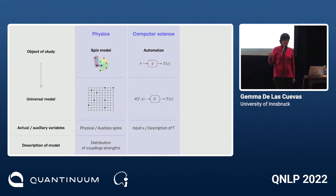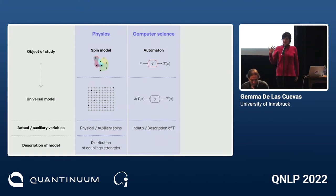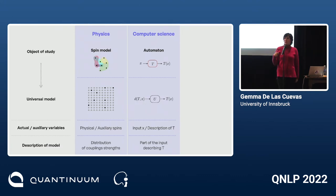Here we again have actual and auxiliary variables — the actual input and the description of the Turing machine — and we're using this additional part of the domain of the universal Turing machine to say what Turing machine it is supposed to mimic.